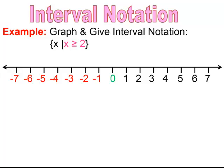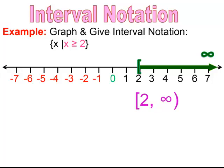This next example, we have a set-building notation where x is greater than or equal to 2. When x is greater than or equal to 2, I'm going to graph this, and at 2, because it's greater than or equal to, I'm going to use a bracket. That bracket indicates it also includes 2 because of the equal to sign. We're shading to the right because it's greater than — it's going to get larger and larger — and it goes indefinitely to positive infinity. So the interval notation starts with the smallest value, which is 2, with a bracket, going to positive infinity with a parentheses, because you always use parentheses for infinity.